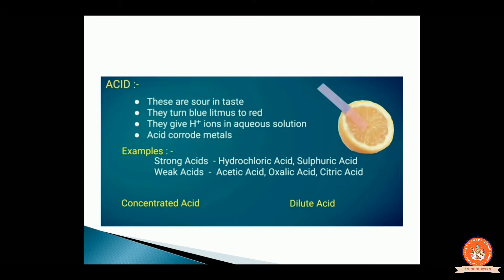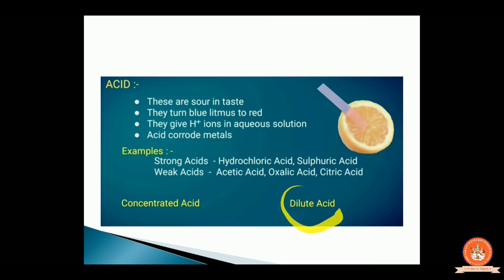You have to drink water with a pour of some lemon, and it will help us to reduce our weight also. Now there are two types of acid: concentrated acid and dilute acid. Concentrated acid means when there is more acid in water; dilute acid means when there is less acid compared to water.